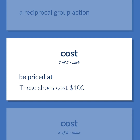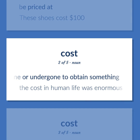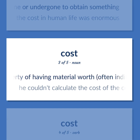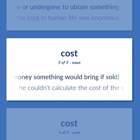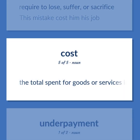Be priced at. These shoes cost $100. Value measured by what must be given or done or undergone to obtain something. The cost in human life was enormous. The property of having material worth, often indicated by the amount of money something would bring if sold. He couldn't calculate the cost of the collection. Required to lose, suffer, or sacrifice. This mistake cost him his job. The total spent for goods or services including money and time and labor.